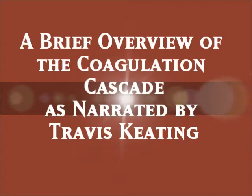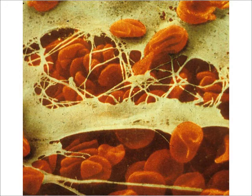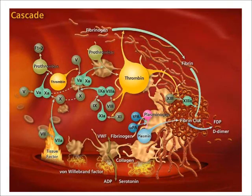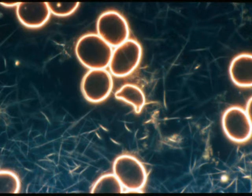A brief overview of the Coagulation Cascade, narrated by Travis Keaton for Dr. Irwin's 9 o'clock Biology 1107 class. The process of forming a clot is known as the Coagulation Cascade. The Coagulation Cascade belongs to a family of chemical reactions known as biochemical cascades. A biochemical cascade is a series of chemical reactions where the product of one reaction is consumed in the next reaction.